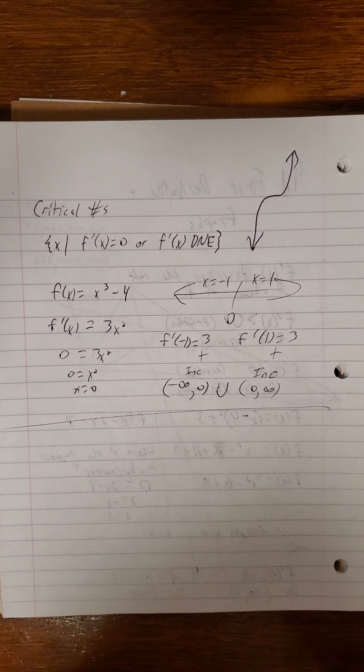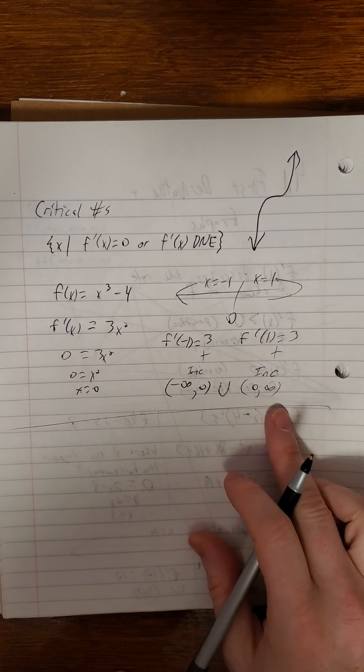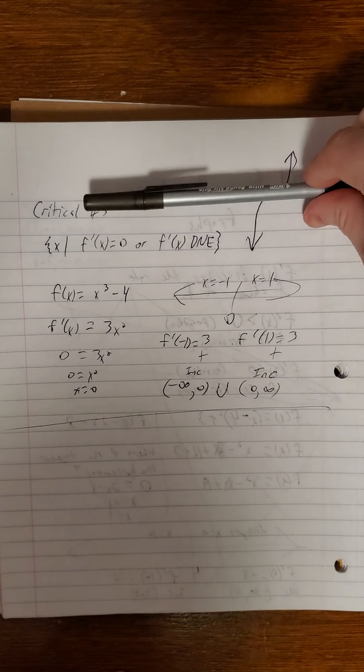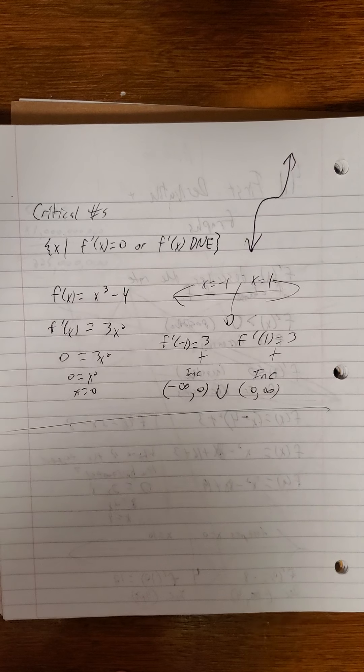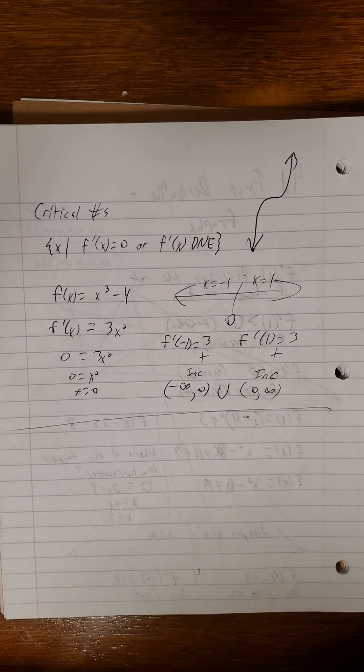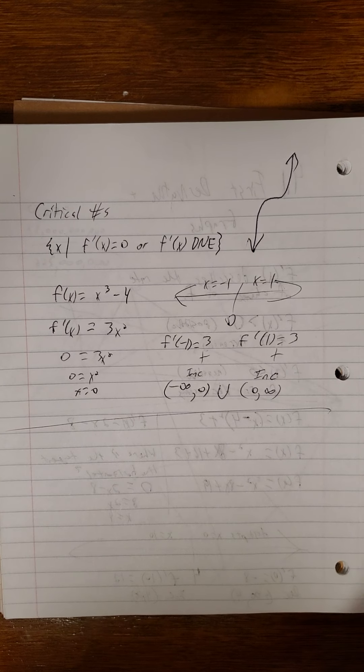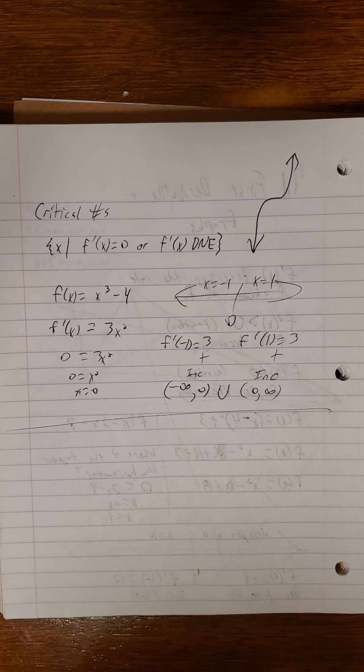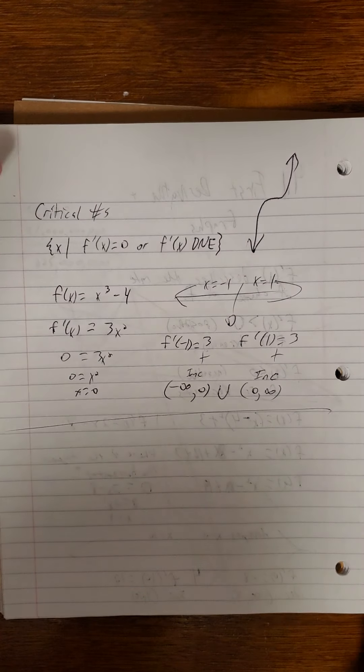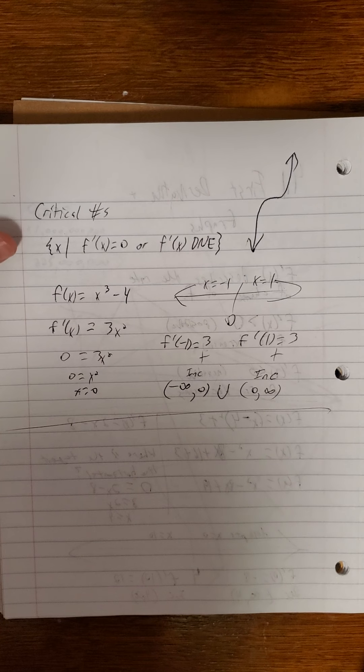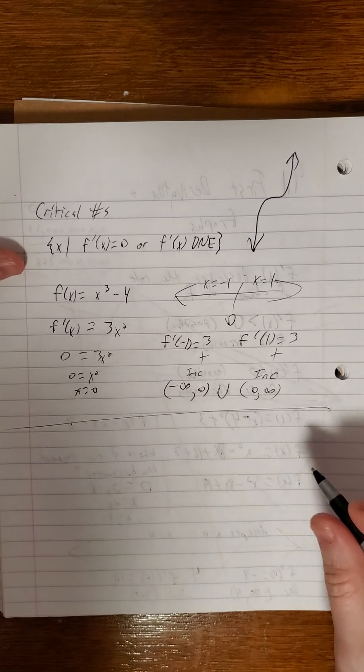So on this one, I wouldn't say that it's increasing on negative infinity to infinity, because we do have that one spot where the tangent line has a slope of 0. And that would be not increasing, of course, then.